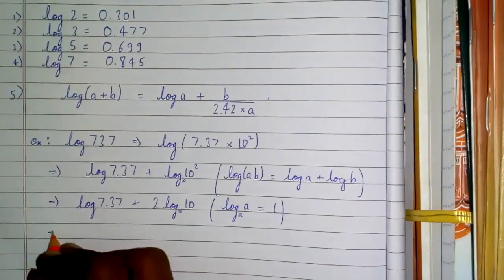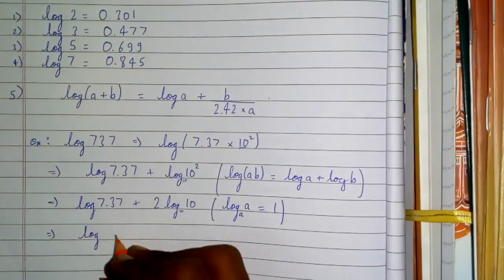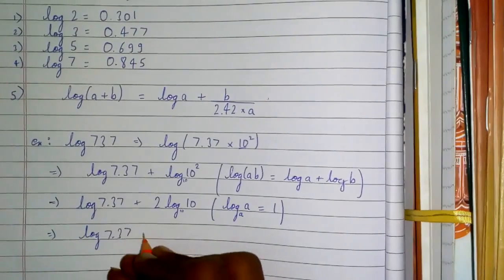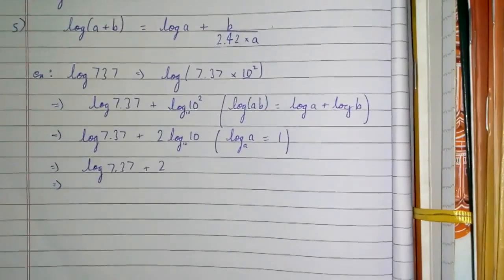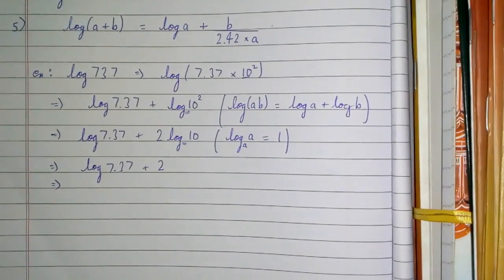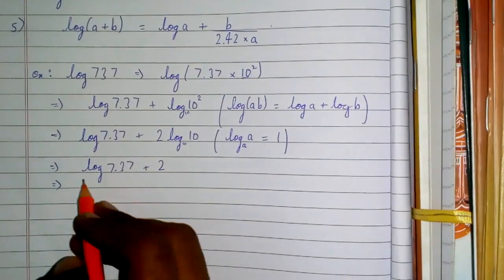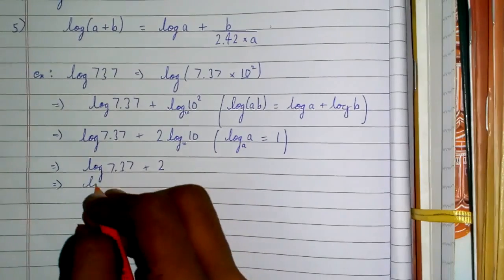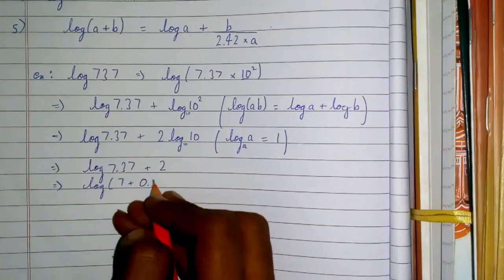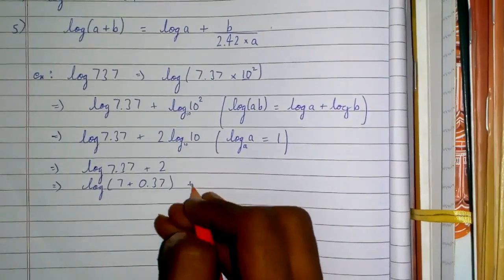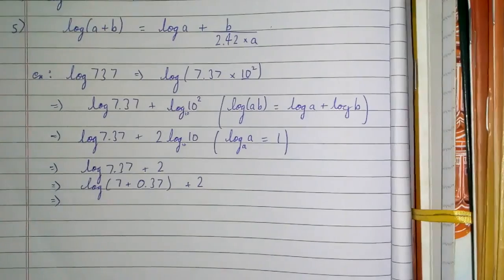So we got log 7.37 + 2. Now we will simplify this term. We can write this as 7 + 0.37, and we'll write this 2 as is.